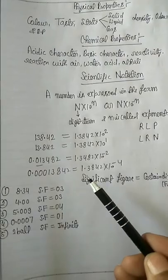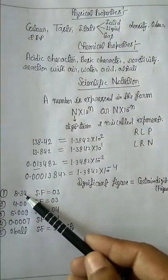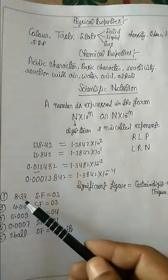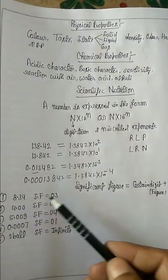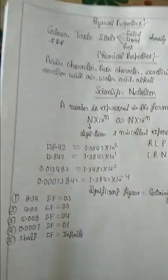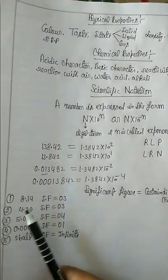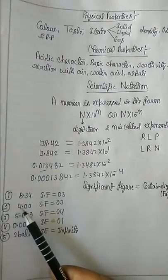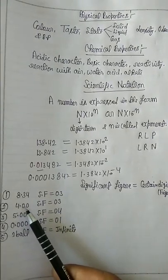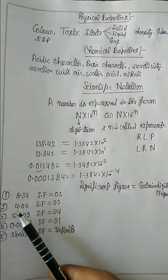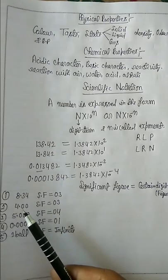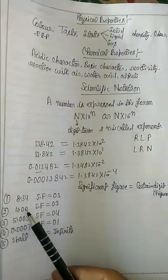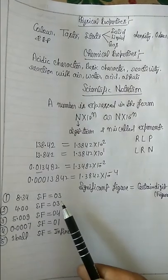Rules of significant figures. Rule number one: all non-zero digits are significant. For example, 8, 3, 4 are non-zero digits, so the significant figure count is 3. Rule number two: all zeros to the right of the decimal point are significant. For example, 4 is a non-zero digit and the zeros are to the right of the decimal, so the total significant figures are 3.